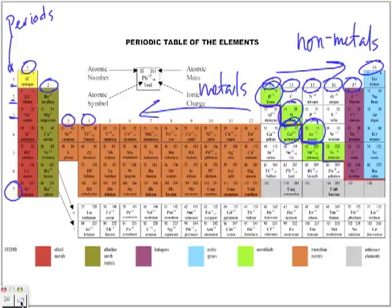Sometimes you'll see group numbers in Roman numerals, numbered from 1 to 8, or as 1 to 8A or 1 to 8B. But for our purposes, we are going to refer to them as group numbers 1 to 18, treating each column as a group from 1 to 18.